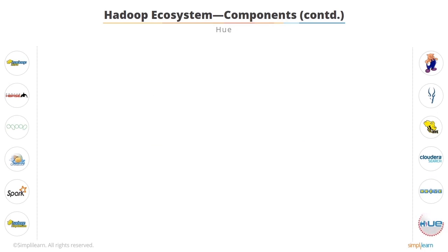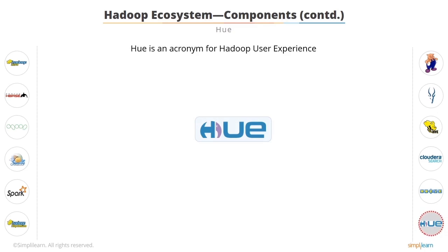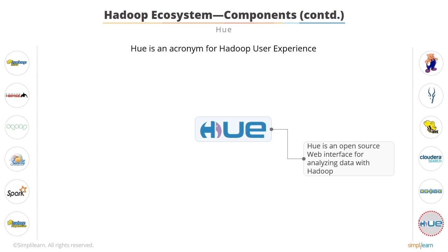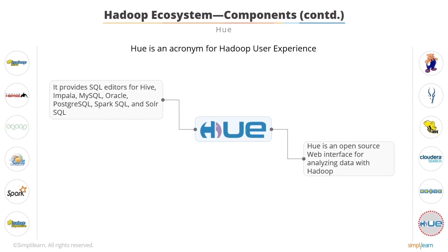Another component in the Hadoop ecosystem is Hue, which stands for Hadoop User Experience. It is an open-source web interface for Hadoop. Using Hue, you can upload and browse data, query a table in Hive and Impala, run Spark and Pig jobs and workflows, and search data. Hue also provides a SQL editor for Hive, Impala, MySQL, Oracle, PostgreSQL, SparkSQL, and SolarSQL. We will learn more about Hue in future lessons.